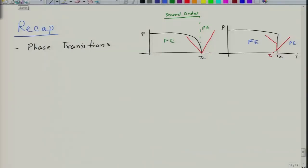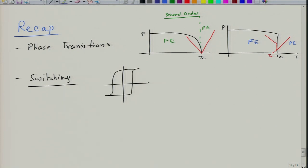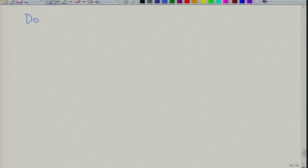We also started our discussion on switching in ferroelectrics, where we looked at the ferroelectric hysteresis loop. Now we are going to talk about the microscopic mechanisms of why we get such behavior in ferroelectric switching. The reason for this behavior lies in domains. We will start our discussion on ferroelectric domains.